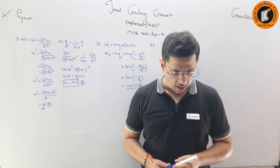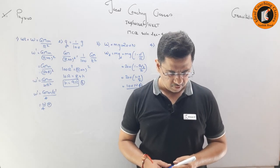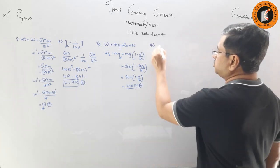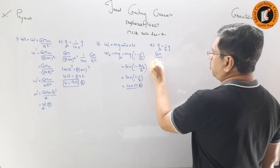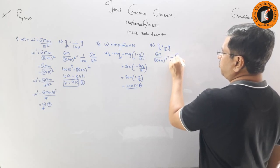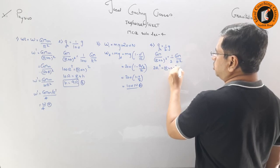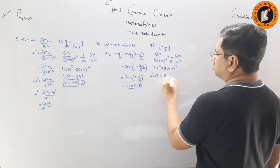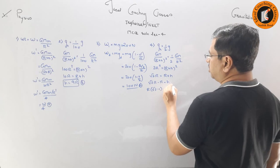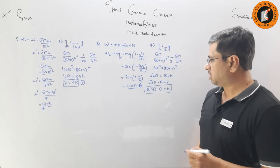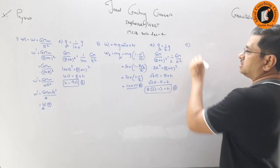Question number 4: R is the radius of the earth. At what height h from the surface will the acceleration due to gravity become half of g? Setting g_h = GM/(R+h)² = g/2, we get 2R² = (R+h)². Taking square root: √2·R = R + h, so h = R(√2 - 1). The answer is option D.